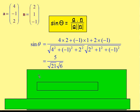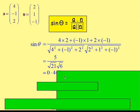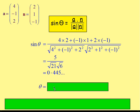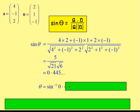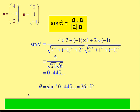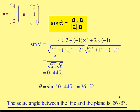Substituting that into your calculator, you end up getting sin theta ≈ 0.445. We then want to find theta, so we use inverse sine: sin⁻¹(0.445). Working that out, you get 26.5 degrees. Because we want the size of an angle, we can say that the size of the acute angle between the line and the plane is 26.5 degrees.